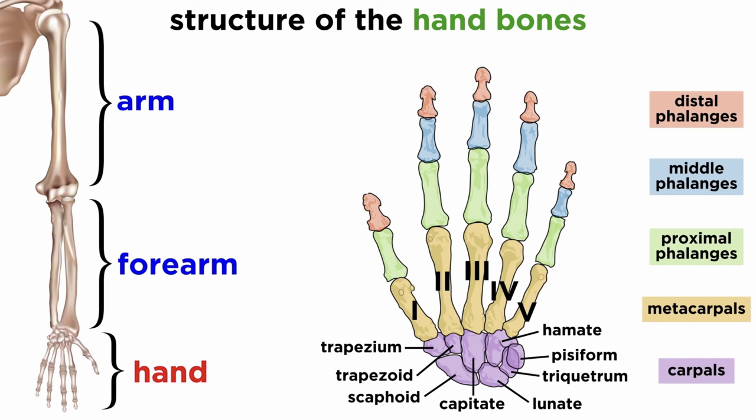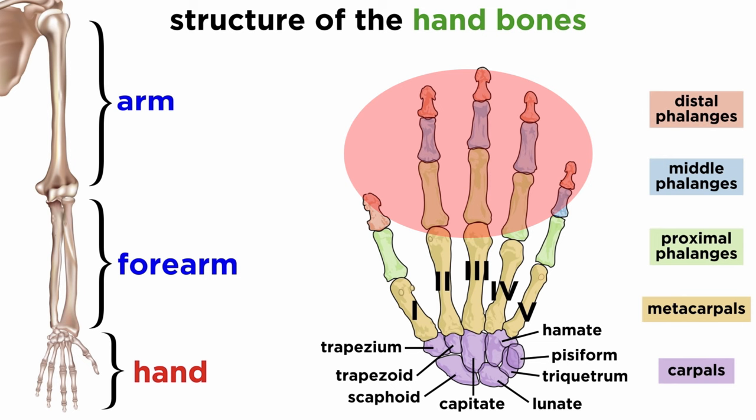From lateral to medial, the other carpal bones include the trapezium, trapezoid, capitate, hamate, triquetrum, and pisiform bones. The carpals articulate with the metacarpals, or palmar bones, which articulate with the phalanges, or finger bones. A single finger bone is called a phalanx, and there are proximal, middle, and distal phalanxes that are separated by the finger joints.